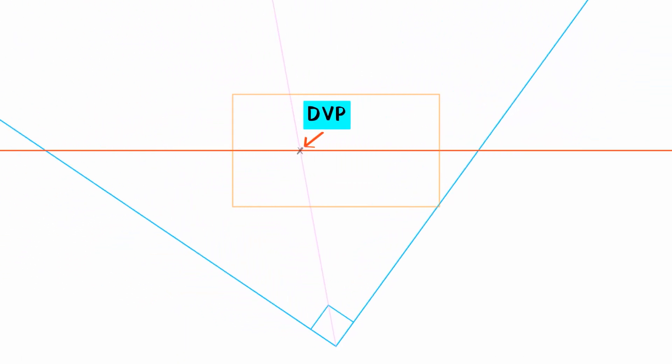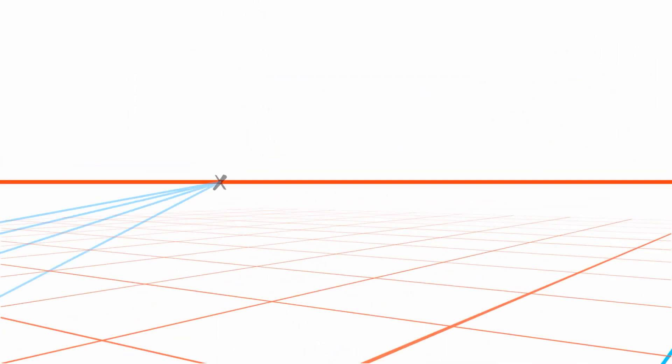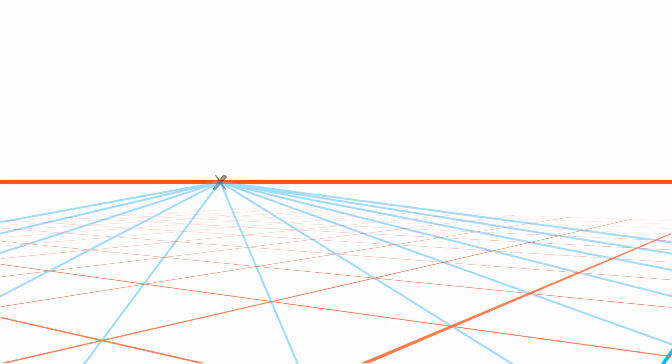But what is it for? Here's a square grid floor in 3D. If you draw diagonally through the squares, connecting the corners like this, they all head for that diagonal vanishing point. We can use this to make our squares and square grids.